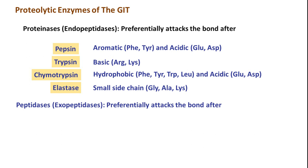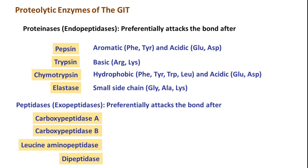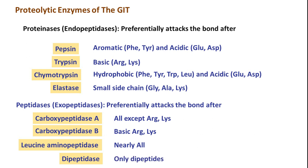Exopeptidases include carboxypeptidase A, carboxypeptidase B, leucine aminopeptidase, and dipeptidase. Carboxypeptidase A covers almost all amino acids except arginine and lysine. Carboxypeptidase B specifically targets basic amino acids like arginine and lysine. Leucine aminopeptidase has no strong preference and broadly breaks down many amino acids. Dipeptidase only breaks dipeptide bonds — two amino acids joined together.